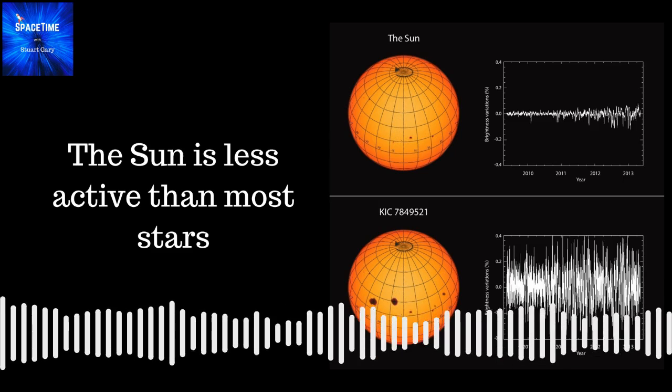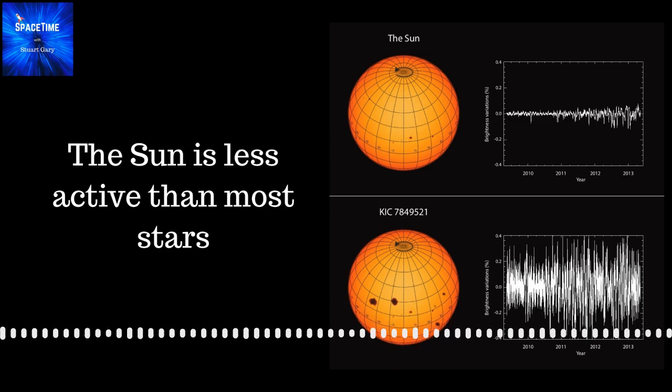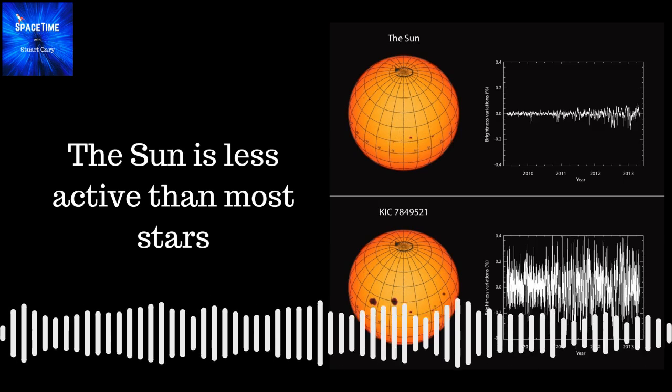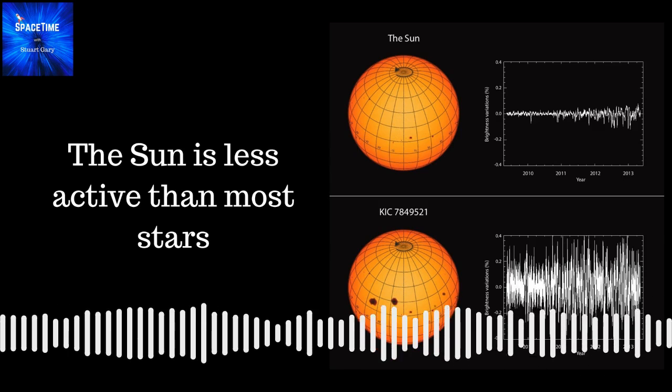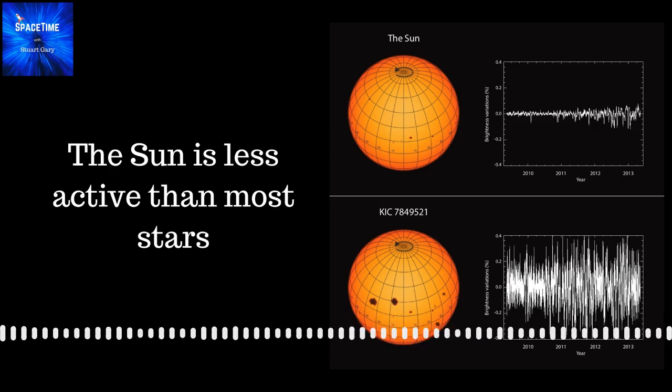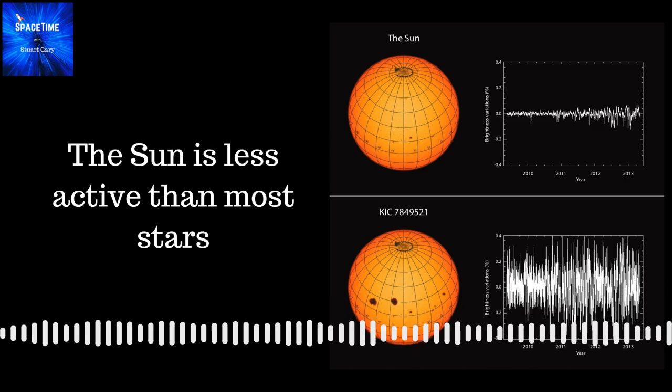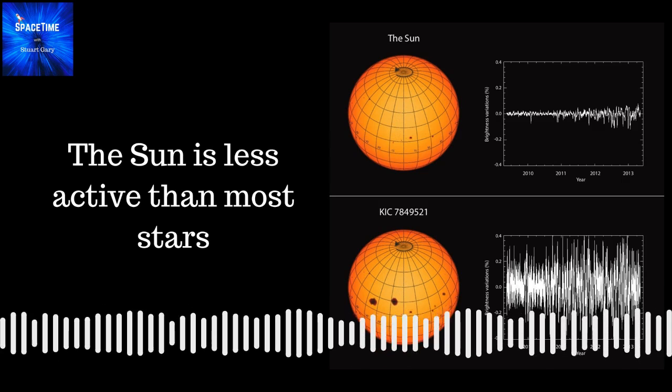And so any small planet, potentially habitable, could have their atmosphere stripped away before life has a chance to form. I'm working with a student at the University of Chicago right now who's trying to characterize flare rates around M dwarfs. And one of the things we're seeing is that they're so much more extreme than other types of stars for hundreds of millions of years.